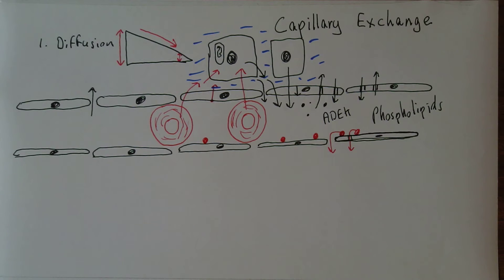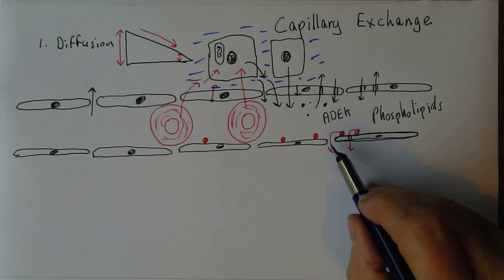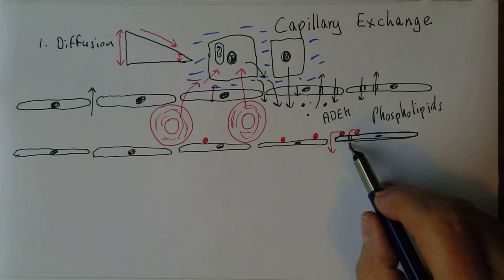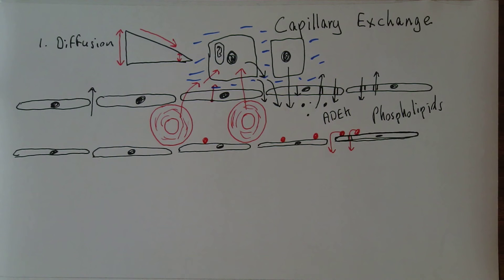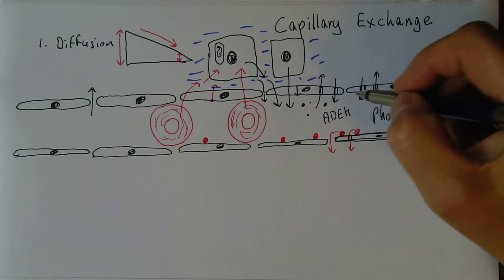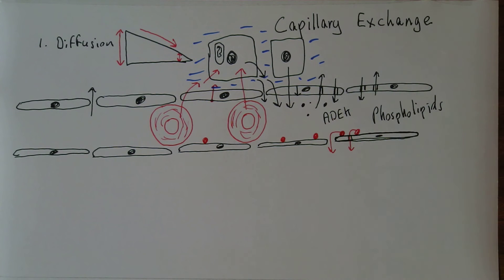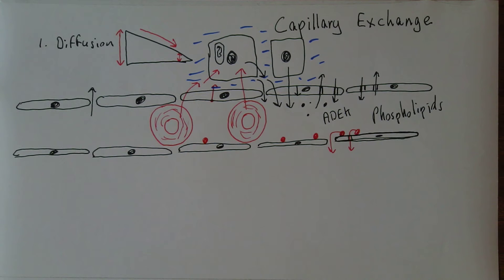In the sinusoids, the intercellular clefts and the fenestrations are much larger, so proteins and red cells can get in and out. But generally, the gaps in the capillary are too small for proteins to be able to get out in the continuous systemic type of capillaries — but more on proteins later. So that's the first mechanism: simple diffusion.